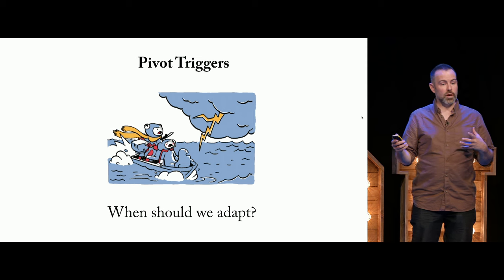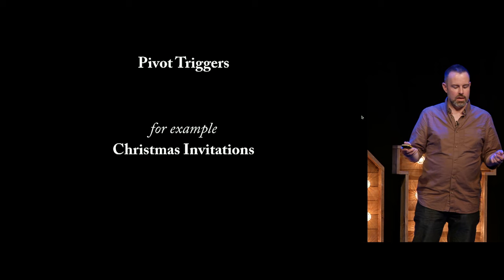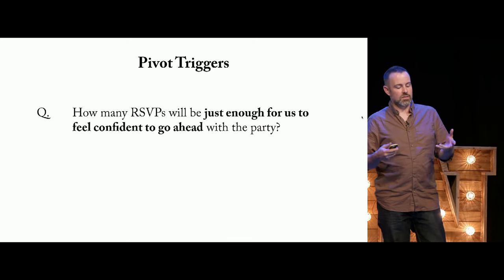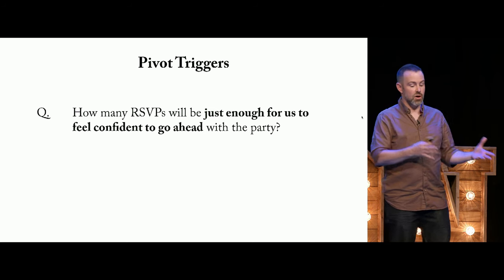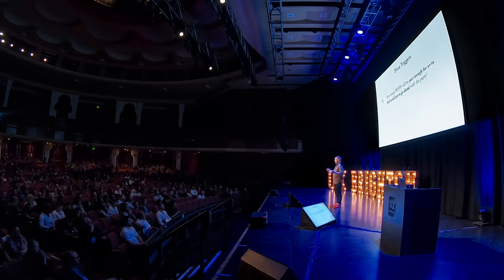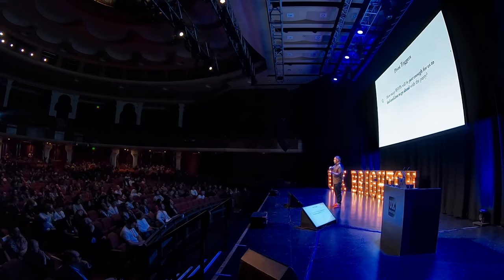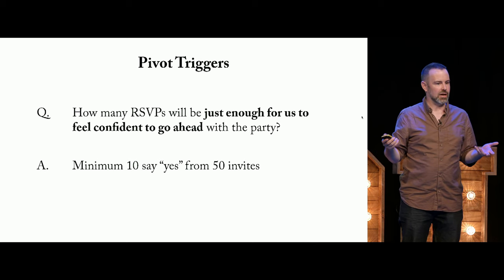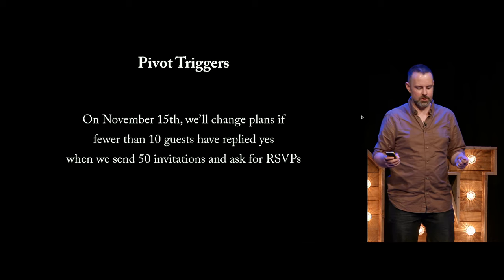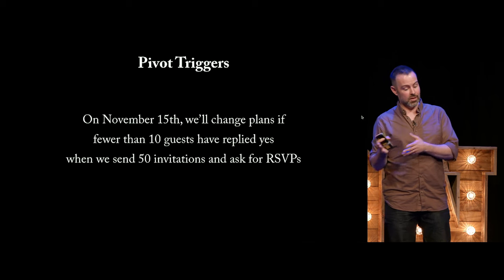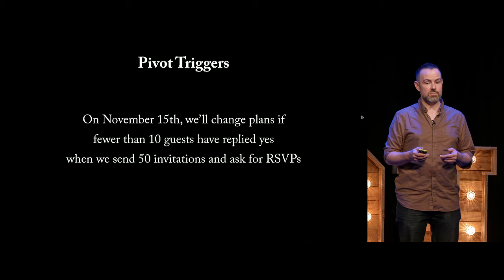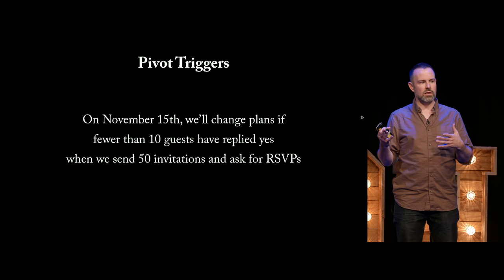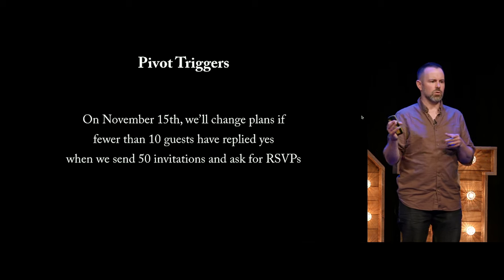Method two is Pivot Triggers — about when should we adapt. Using the Christmas invitation example: how many RSVPs will be just enough to feel confident going ahead with the party? We're discussing not what the best party would be but what a just-good-enough party would be. Let's say minimum 10 people say yes out of 50 invites. We write a pivot trigger statement: 'On November 15th we will change our plans if fewer than 10 guests have replied yes when we send 50 invitations.'